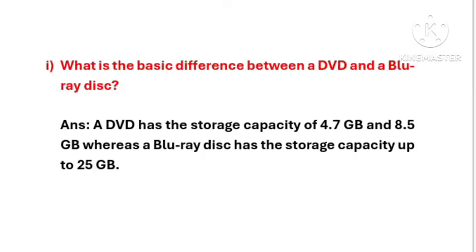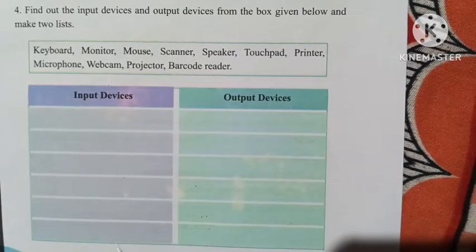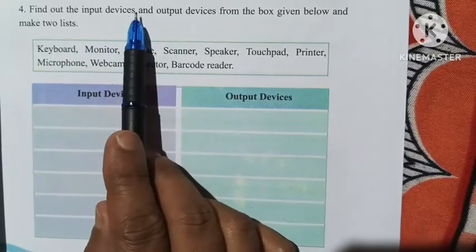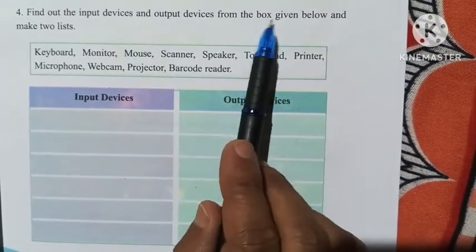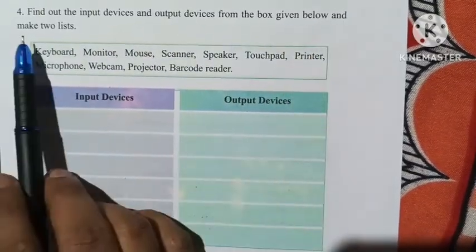The basic difference between a DVD and a Blu-ray disc: a DVD has a storage capacity of 4.7 GB and 8.5 GB, whereas a Blu-ray disc has a storage capacity of up to 25 GB. Our next question asks us to find the input devices and output devices from the box given and make two lists.